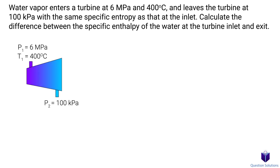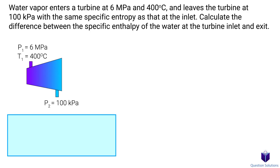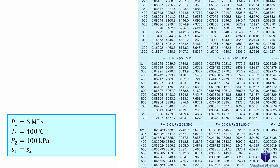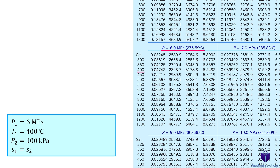Let's take a look at this question, where we have water vapor entering a turbine and we need to figure out the difference between the specific enthalpy at the inlet and the outlet. The water vapor enters at 6 MPa with a temperature of 400°C. It leaves at 100 kPa and has the same specific entropy at the inlet and outlet. Since we have the initial pressure and temperature, we can find the enthalpy from a superheated water table. Here at 6 MPa and 400°C, this is the enthalpy value we're looking for. Let's also write down the entropy value.